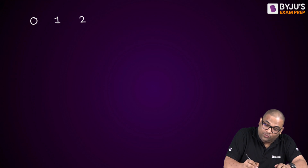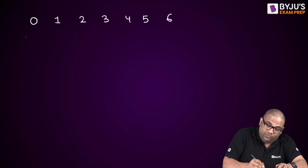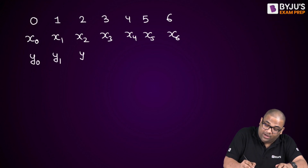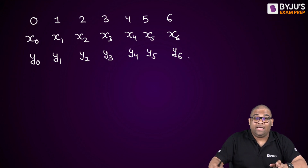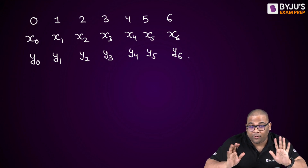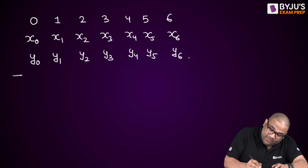Let me give a small example to help you remember. Suppose there are data points numbered 0 through 6: x₀, x₁, x₂, x₃, x₄, x₅, x₆ with corresponding values y₀, y₁, y₂, y₃, y₄, y₅, y₆. Pause the video now and try to write down the expressions for both the trapezoidal and Simpson's one-third rule, then check with me.